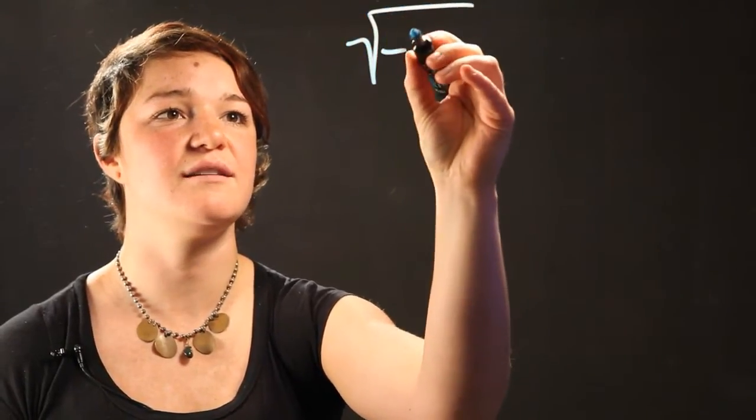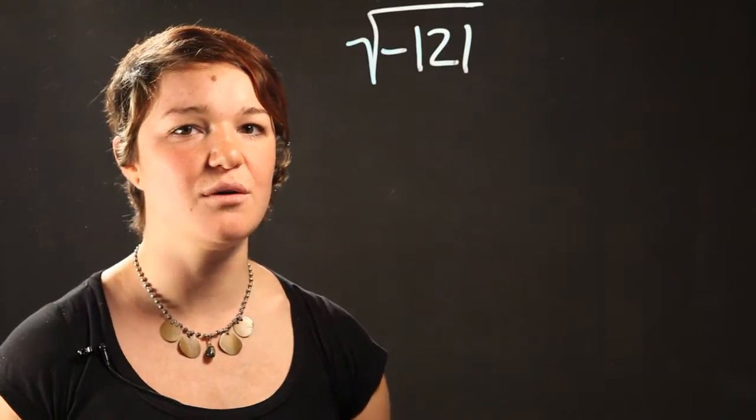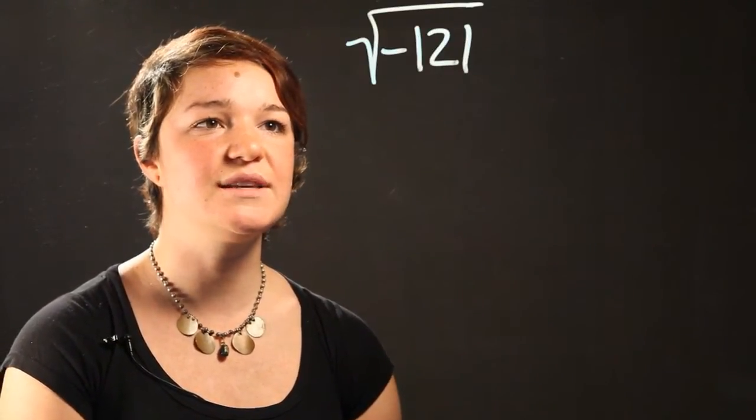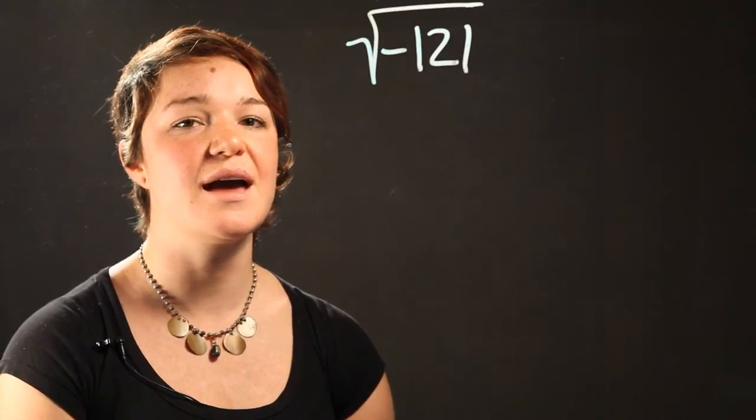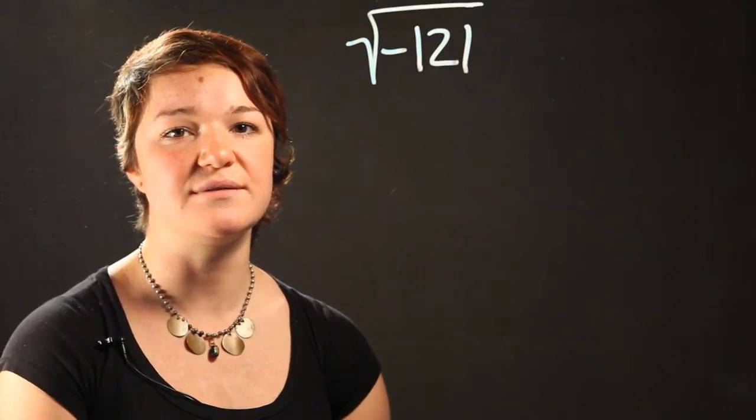We'll start off by doing radical of negative 121. So negative radicals are always really scary. So the way to solve this one is to remember that when you multiply two negative numbers by each other, they equal a positive number.